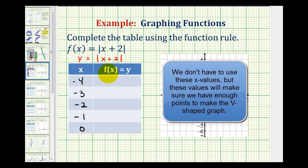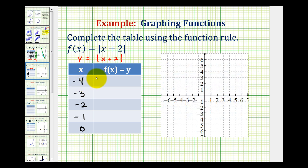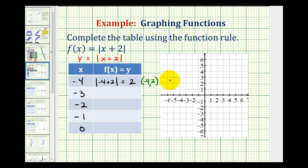To determine the corresponding function value or y value when x is negative 4, we substitute negative 4 for x, giving us the absolute value of negative 4 plus 2. This is the absolute value of negative 2, which is positive 2. So the graph of our function would contain the point with an x-coordinate of negative 4 and a y-coordinate of positive 2, which would be this point here.